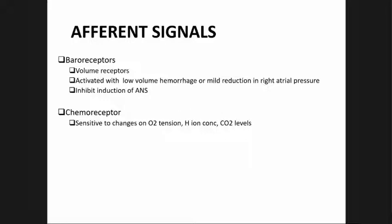Afferent signals transmitted from the periphery are processed within the central nervous system and activate the reflex efferent responses. We have baroreceptors and chemoreceptors. Baroreceptors: volume receptors are activated with low-volume hemorrhage or mild reduction in atrial pressure and inhibit induction of the autonomic nervous system. Baroreceptors are a fast-acting blood pressure control mechanism — when blood pressure is low or high, it is detected immediately and normalizes, involving the renin-angiotensin-aldosterone system.